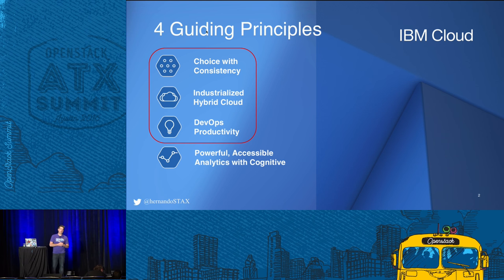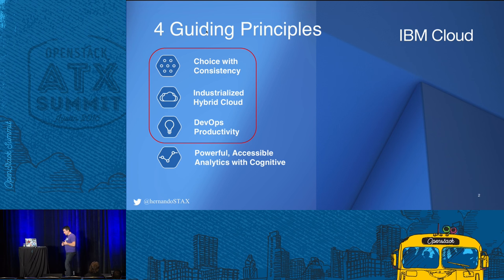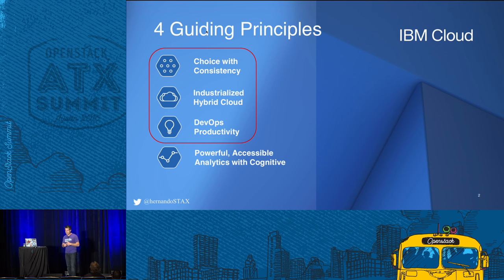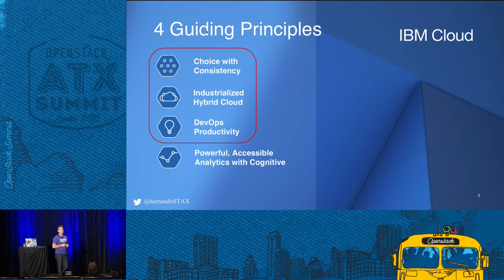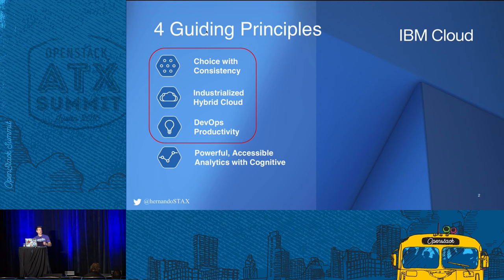To get started, we're going to talk about some of the guiding principles that IBM Cloud uses, focusing on the top three most relevant for today. Choice with consistency is the idea of being able to choose your deployment mechanism while ensuring a very consistent experience across that as a user — whether you're buying public, local, or dedicated cloud, you get the exact same service and experience, as well as consistency in the services. And industrializing hybrid cloud: no matter how many clouds we're producing, whether public, local, or dedicated, they're extremely consistent. One customer's experience is very similar to another's, with no drift in the product.